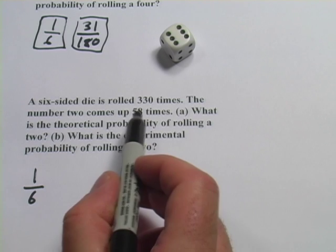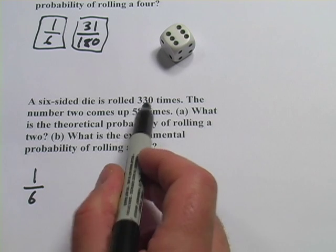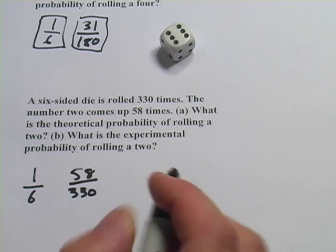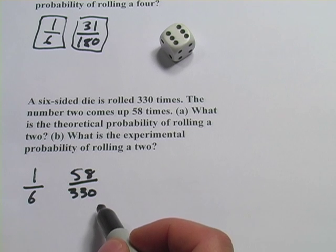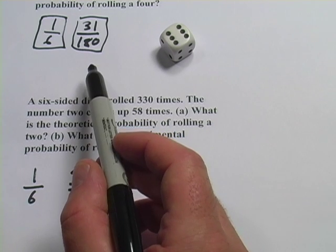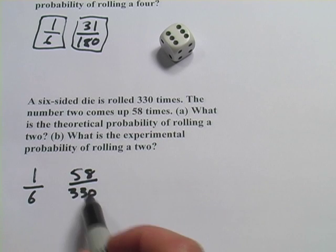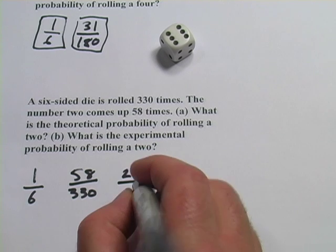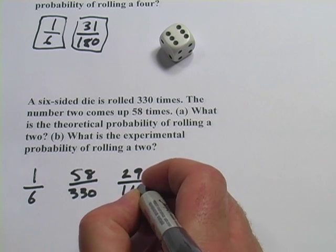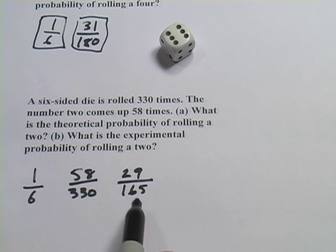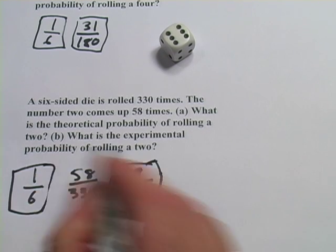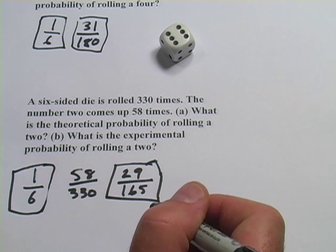The second part, we just look at how many times a two came up out of the total number of times it was thrown, so 58 out of 330. And then if you can, you should try to reduce that fraction. I didn't reduce 31 out of 180 because I don't think you can. Let's see. We can definitely take a two out of both of these. We would get 29 on the top, and what, 165 on the bottom? And I don't think you can reduce that any further. So our theoretical probability is one in six. Our experimental probability is 29 in 165.